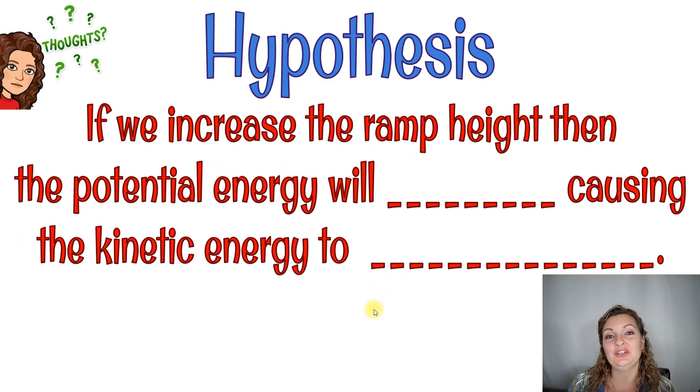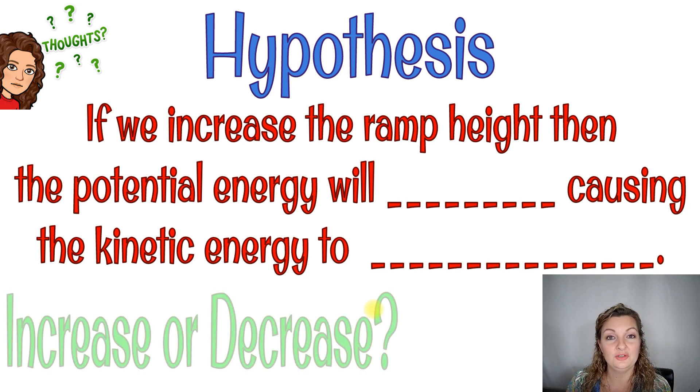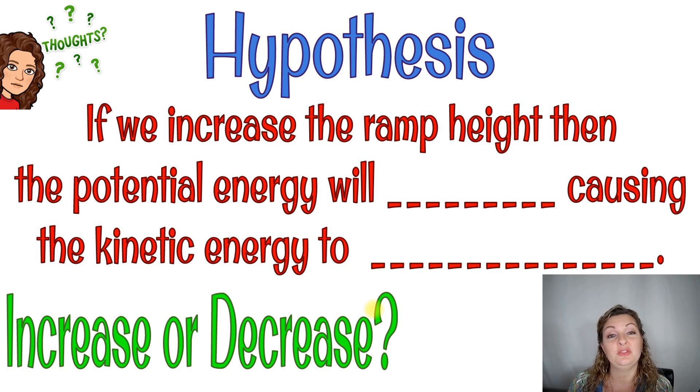The very first thing we need to do is come up with a hypothesis or what we think is going to happen. So our hypothesis states if we increase the ramp height, then the potential energy will blank, and you're going to write increase or decrease, whichever one you think it will do. And this will in fact cause the kinetic energy to do what? Increase or decrease. So again, this is all up to you what you think is going to happen in this experiment.